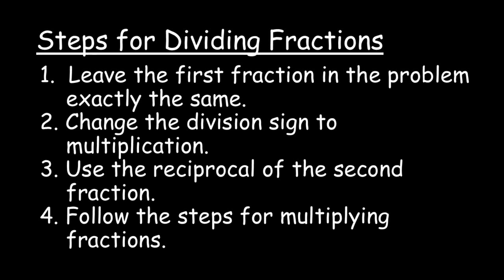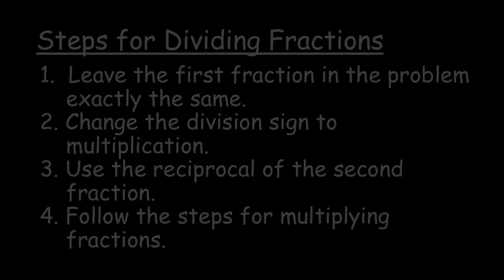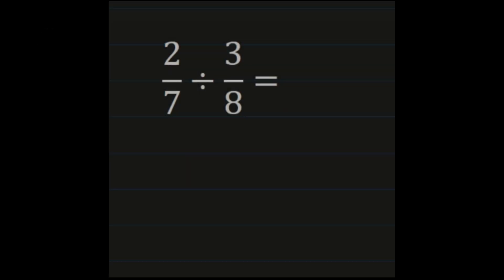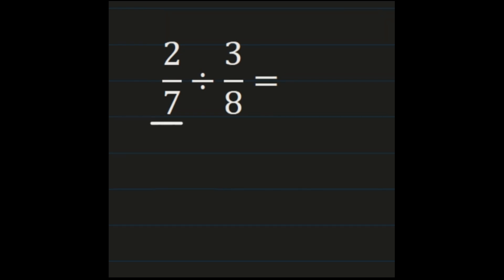Let's take a look at some examples. For our first problem, we have 2/7 divided by 3/8, and we're going to walk through this problem showing all of our steps and all of our work. So our first step is to look at the first fraction, the 2/7, and 2/7 is going to stay exactly how it is. You're going to write it exactly how it is, no matter what this first fraction is.